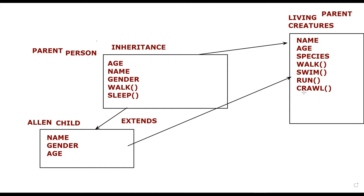Just as we can inherit features from our parents but parents cannot inherit features from us, the same concept applies here. You can inherit methods, variables, all properties, and even constructors from parents. Inheritance is achieved with the keyword extends — child extends parent.